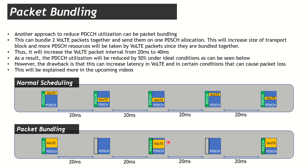With packet bundling, the user does not need a PDCCH at every 20ms slot, so PDCCH utilization is halved — control channel congestion can go down by 50%. However, the drawback is that packets are now delayed by 20 milliseconds. Since VoLTE packets must be transmitted within 100 milliseconds, increasing delay raises the probability of packet loss, as packets delayed beyond 100 milliseconds may be dropped. This is something that will be addressed in future sessions on packet loss optimization.